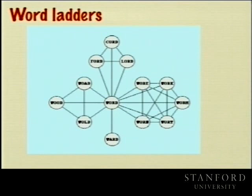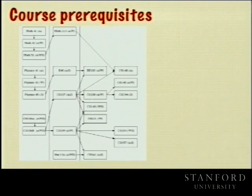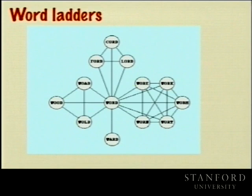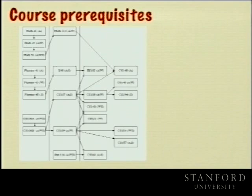Any kind of prerequisite structure, such as one for a major — you need to take this class before that class — also fits the name graph. There's a connection where taking 106A leads into 106B, and that connection doesn't go in reverse. In the word ladder case, all arcs are undirected — you can traverse from 'wood' to 'word' and back again. There may be situations where you have directed arcs, implying a one-way directionality through the paths.